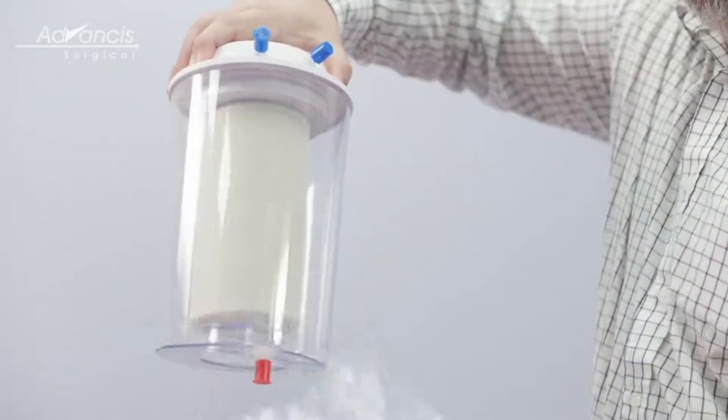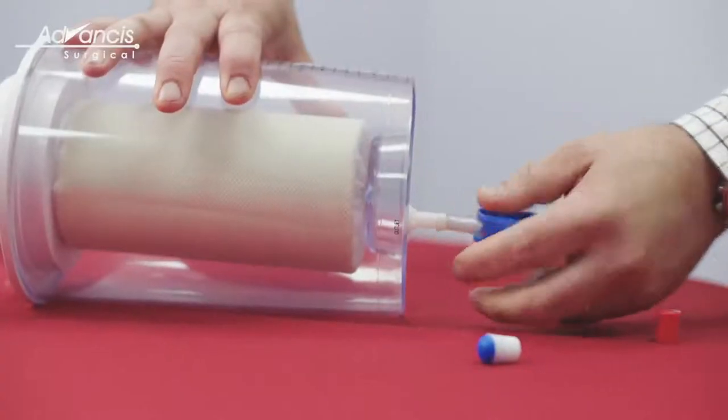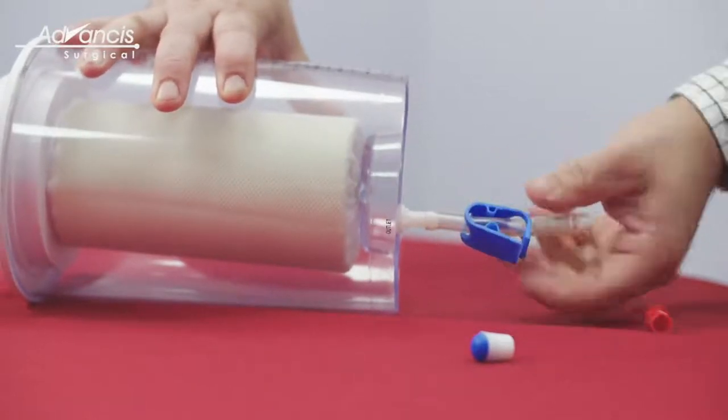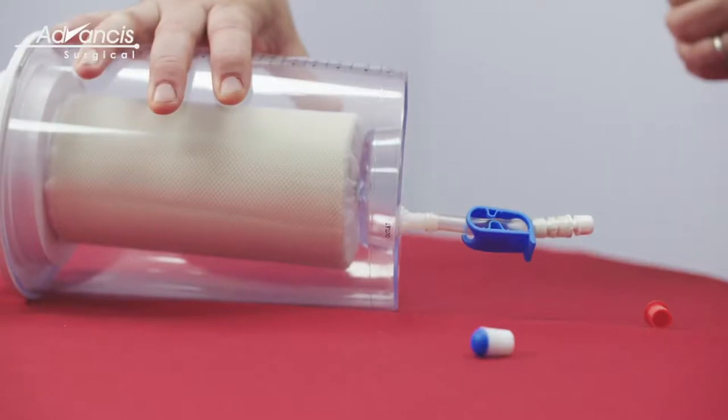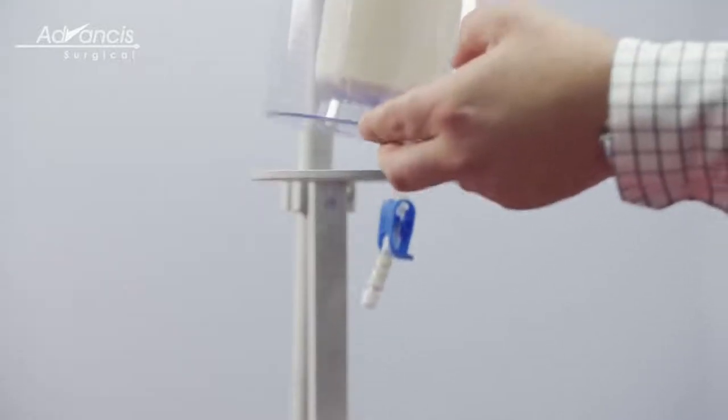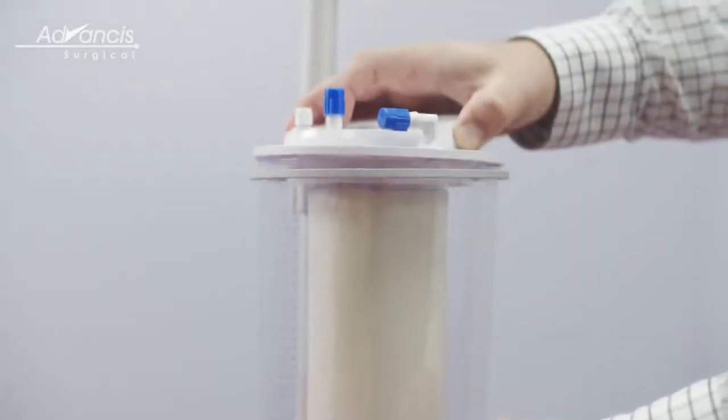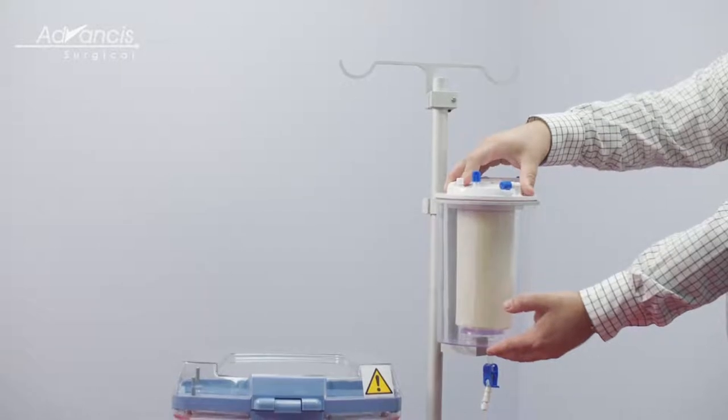Open the Hemosep Collection Reservoir packaging and place the small tube into the outlet at the bottom. Ensure that the clamp is closed and the tube is seated securely. Place the Hemosep Collection Reservoir into the holder on the Hemosep Shaker unit.